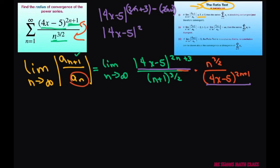So let's pull that out and write this as 4x minus 5 squared. We can take away the absolute value signs because it's squared. We only need to take the limit of n.